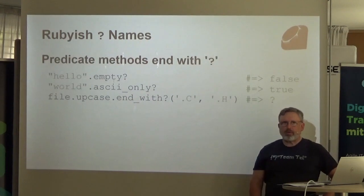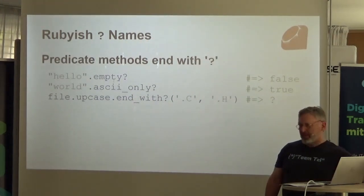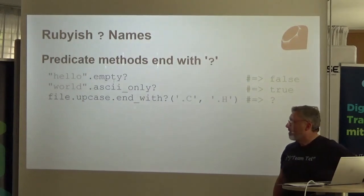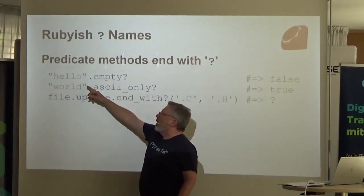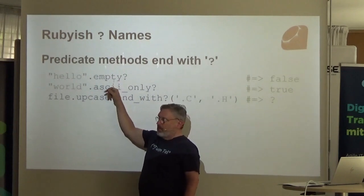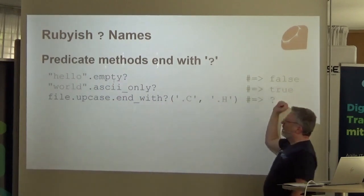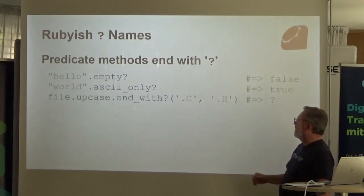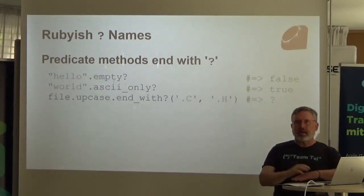Looking around at Ruby — cool Ruby — they have this question mark often appearing at the end of predicates. So: is it empty? No. Does it ask you only? Yes. That sort of thing. I thought that was kind of cute.